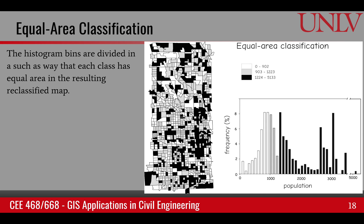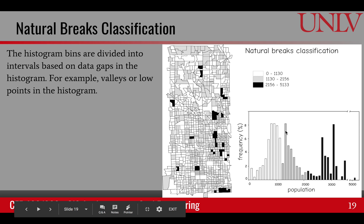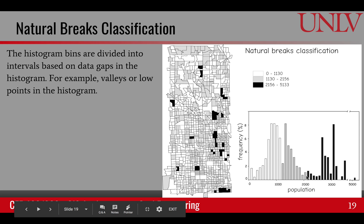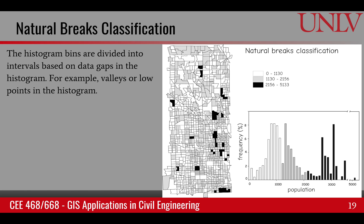The third type is natural breaks, an automatic process where it looks at the histogram and finds natural breaks. For example, it looks for a gap in values and creates a new group from that point onwards. It identifies peaks in the histogram and estimates breaks accordingly. In any case, reclassification is a useful tool when trying to reassign values based upon a certain rule, and it can help create new maps from existing maps and perform spatial analysis.